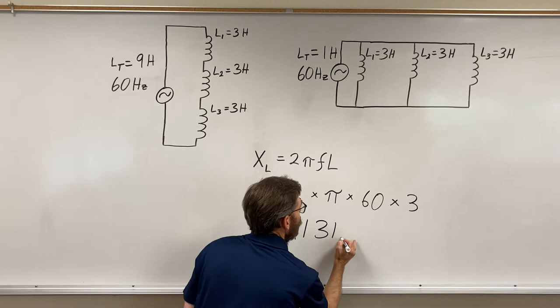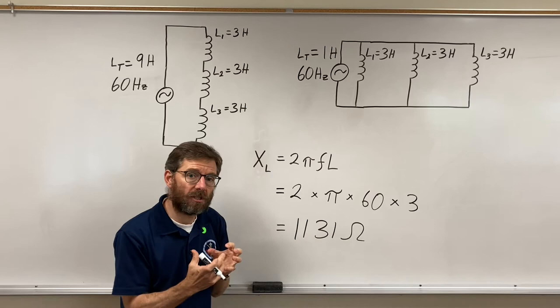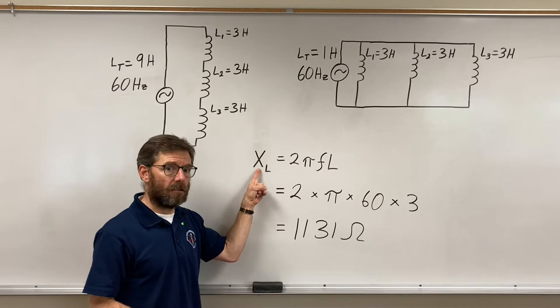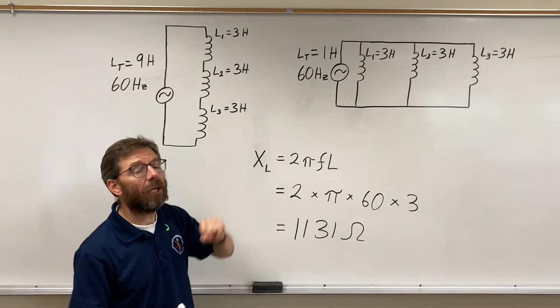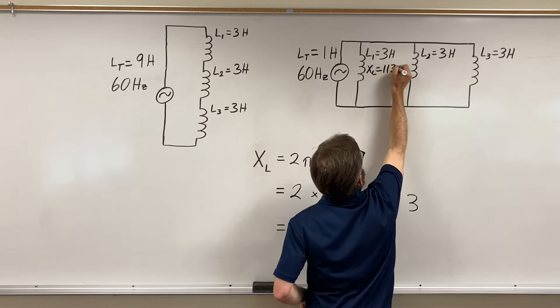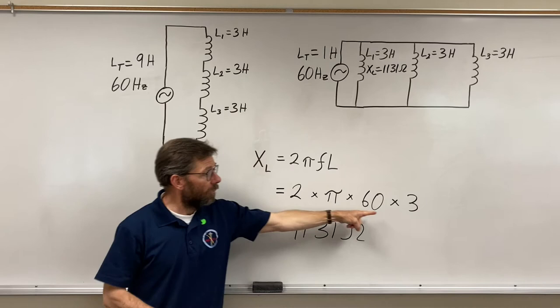I call them ohms because they're a form of opposition. They are not resistance, they are reactance. Those terms will become increasingly more important. So our inductive reactance is 1131 ohms per inductor. My XL, and that will be for all the inductors because they're all 3 Henry's apiece, they're all running at 60 hertz.